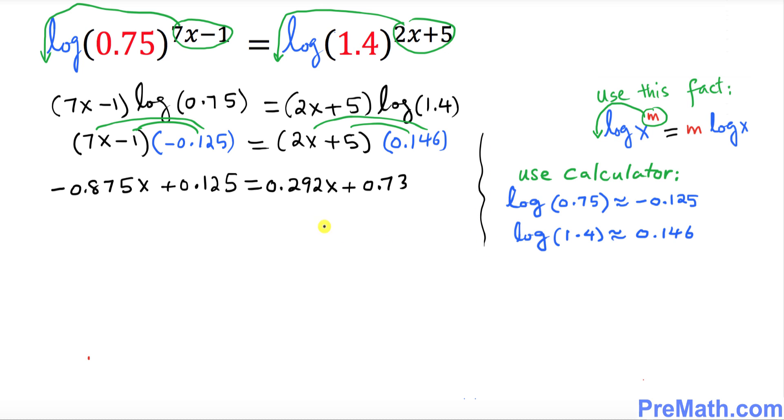So far so good. Now the next thing we're gonna do is we want to move x's on one side and the constants on the other side to solve for x. So I'm gonna add 0.875x on this side and we're gonna add 0.875x on this side as well.